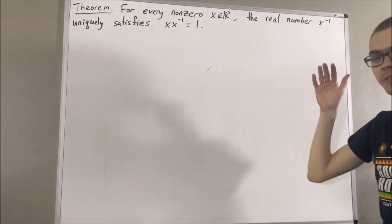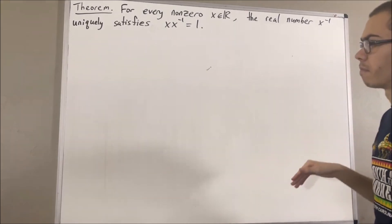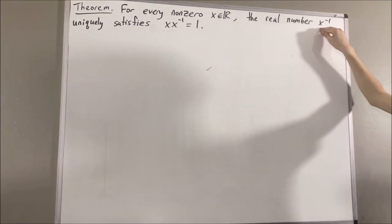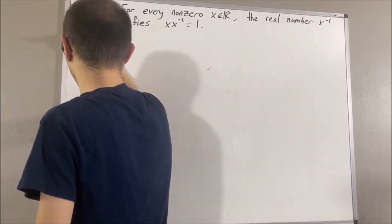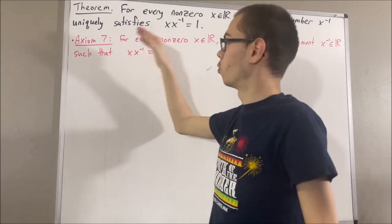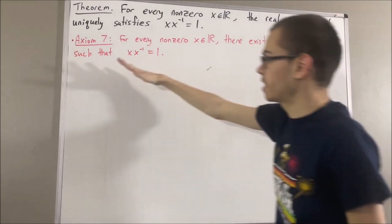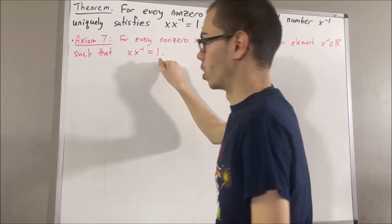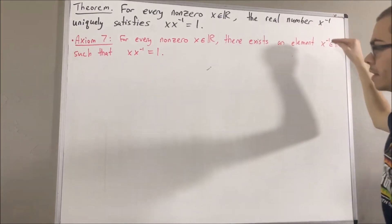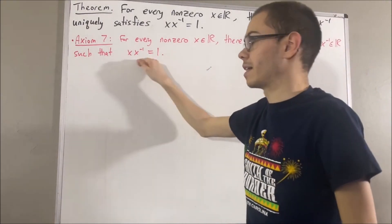Now, in this series, we are using a list of 10 axioms for the real number system, and I'll leave that list of axioms in the description of the video below. Let's first remind ourselves of the axiom that introduces this real number which we call the reciprocal of x. We have axiom 7, which tells us that for every non-zero real number x, there exists a real number which we call the reciprocal of x, that satisfies the equation x times the reciprocal of x is equal to 1. The whole point of this theorem is we want to show not only is the reciprocal of x a real number that satisfies this equation, but the reciprocal of x is the only real number that satisfies this equation.